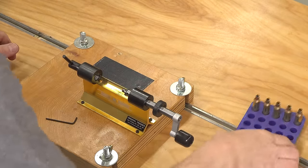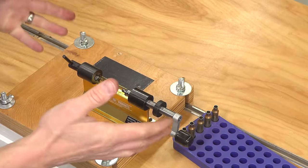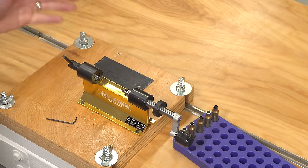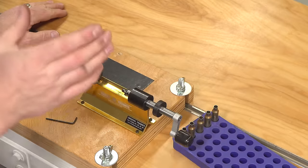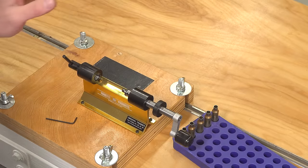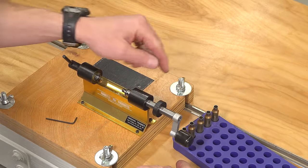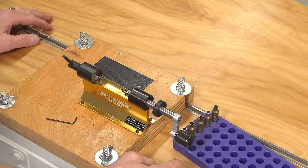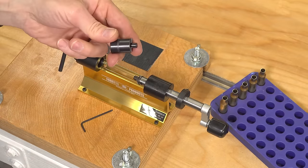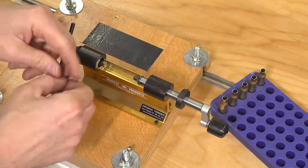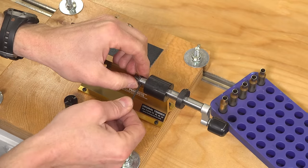That's the basic trimming process with the Forster original case trimmer. Let's next take a look at the 3-in-1 which is not only going to trim to length but it's also going to chamfer the inside and outside of the case mouths. So this is the 3-in-1 case mouth cutter and it's going to take only a couple quick steps to install.